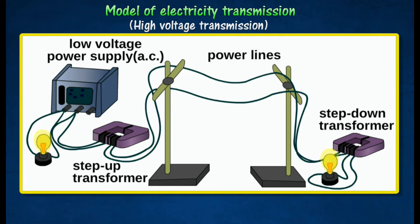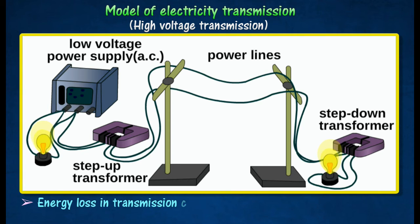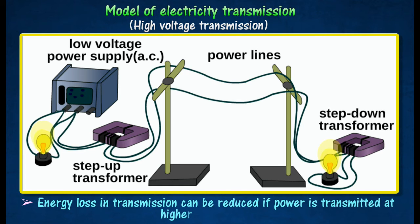When the power supply is switched on, the lamp at the power station and the lamp at the consumer's end are both lighted up brightly. This demonstration shows that energy loss in transmission can be reduced if power is transmitted at higher voltages.